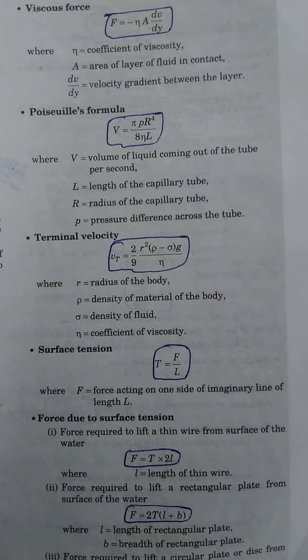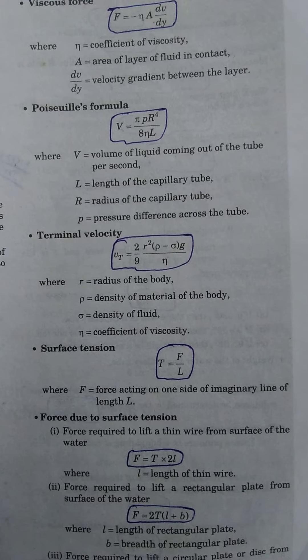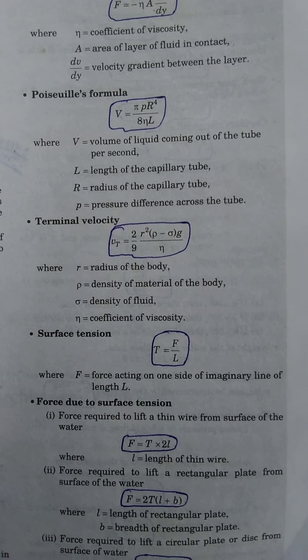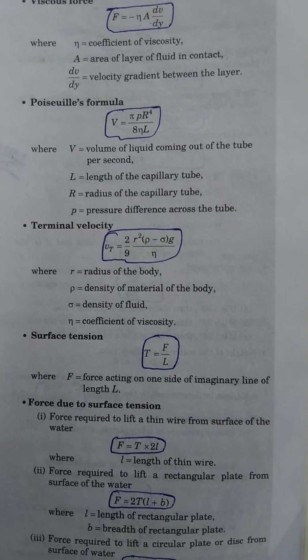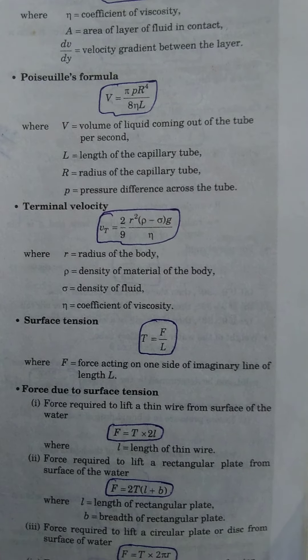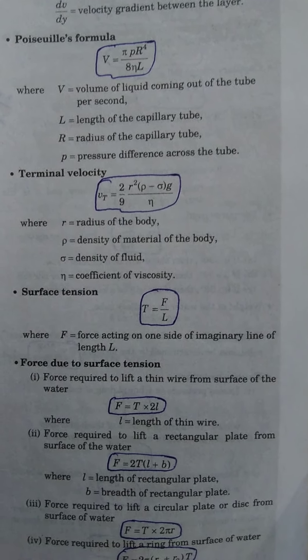Surface tension: T equals F/L, where F is the force acting on one side of an imaginary line of length L. Force required to lift a thin wire from the surface of water: F equals T × 2L, where L is the length of the wire.